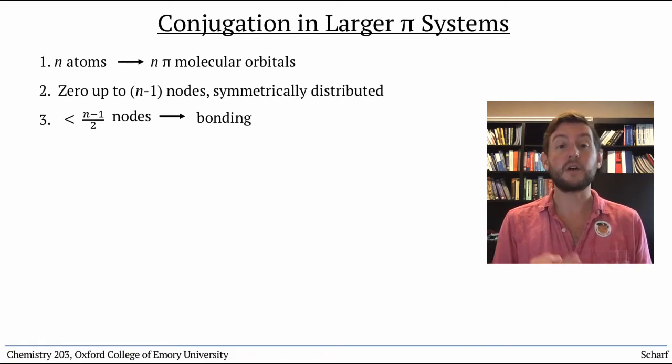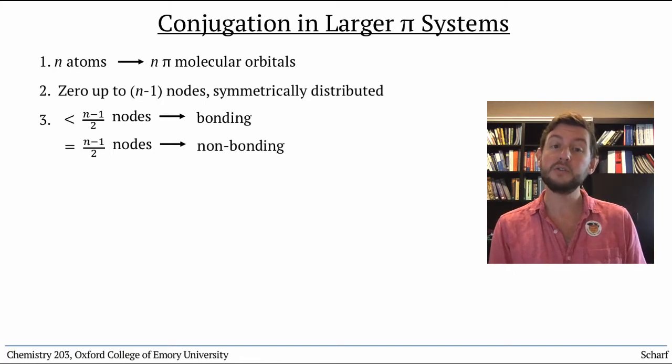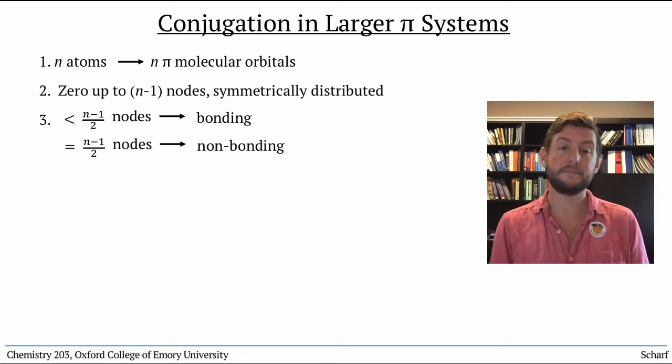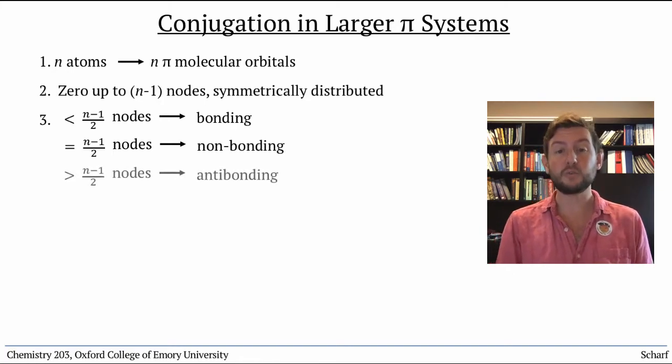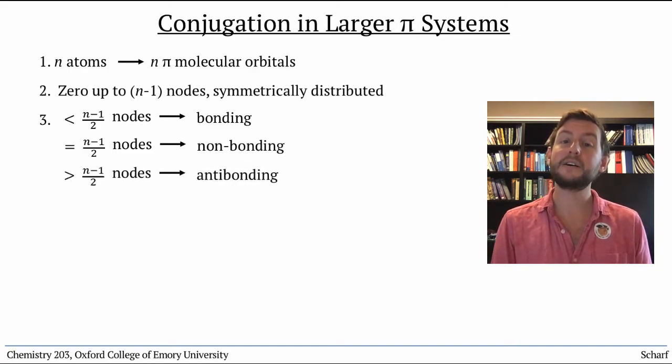So for example, for a three atom system, any orbital with less than one node is bonding. Molecular orbitals with exactly N-1 over 2 nodes are nonbonding. And those with greater than N-1 over 2 nodes are antibonding.